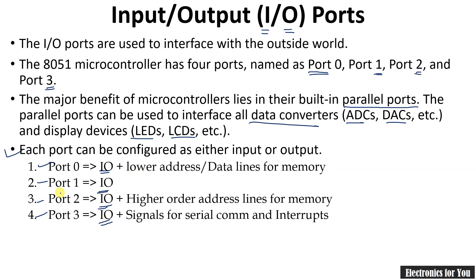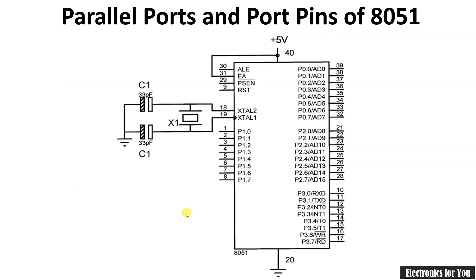Port 0 can work as lower-order address lines as well as data lines for the memory. Port 1 only serves as an I/O port. Port 2 works as higher-order address lines for the memory. Port 3 works for the signals for serial communications and interrupts.